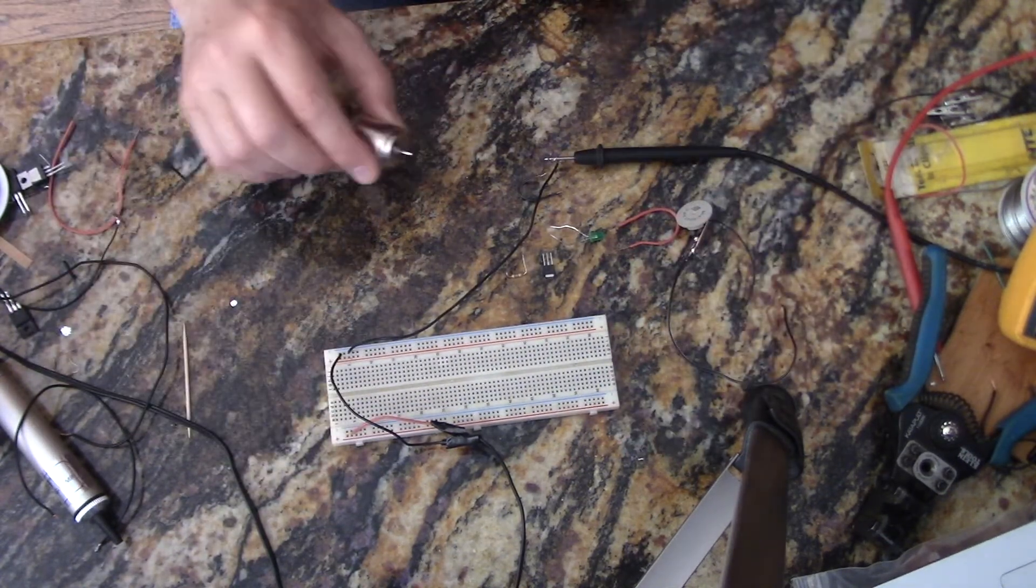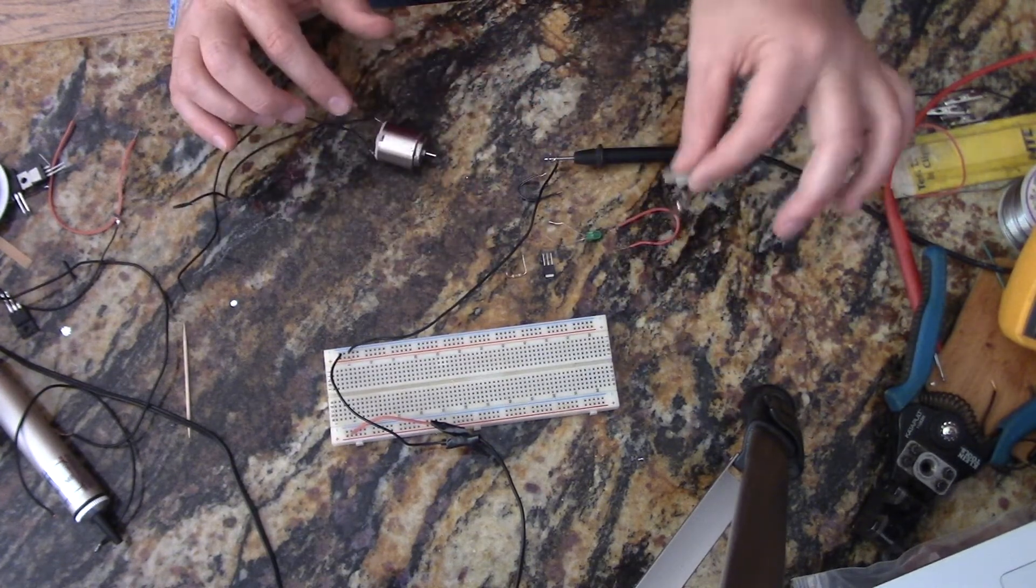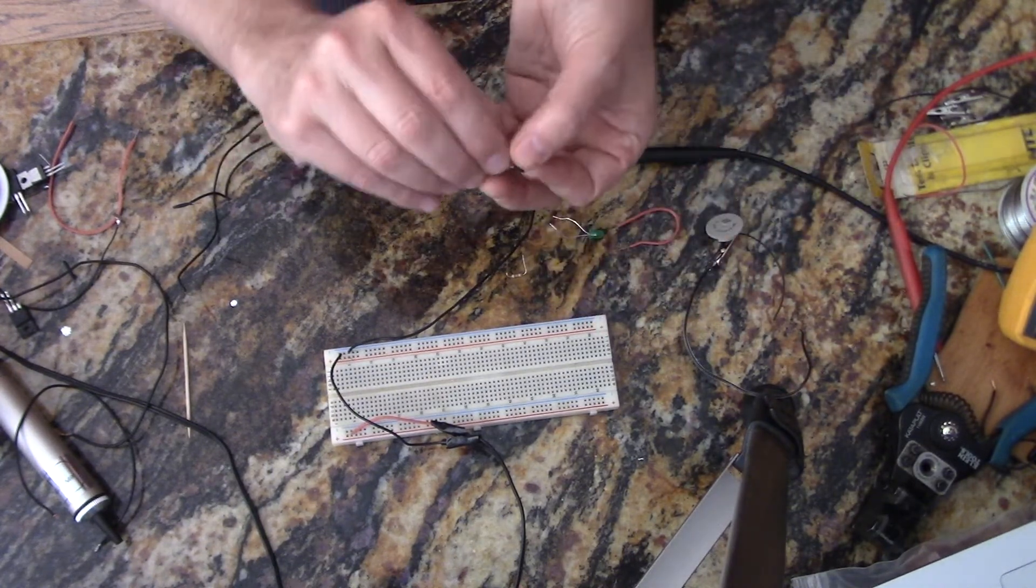I've got a DC motor, some hook up wire, an LED and a resistor, a potentiometer, and then here is my IGBT.